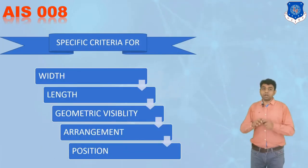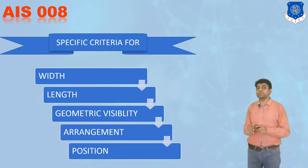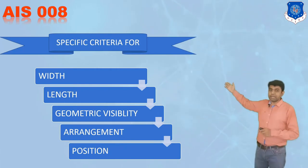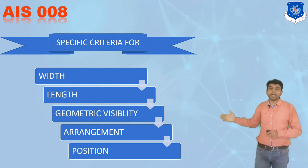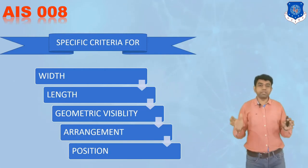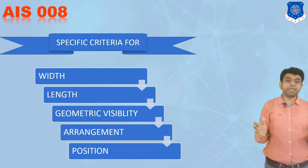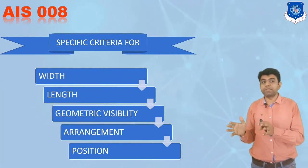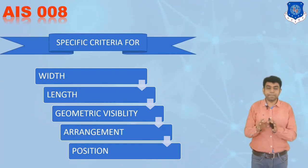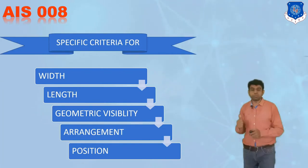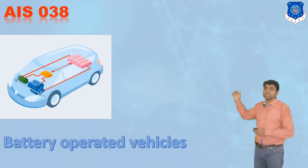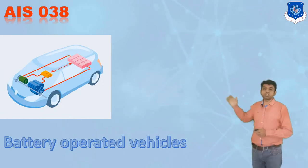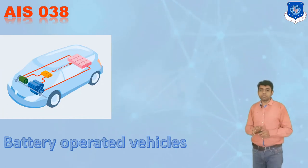The specifications for the vehicle headlamp must follow width criteria, length criteria, geometric stability, and the arrangement in which the vehicles are positioned. The position of each particular lamp must be as per the specification given in AIS 008.